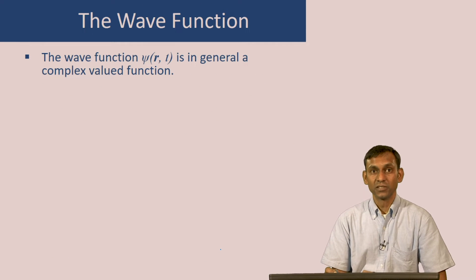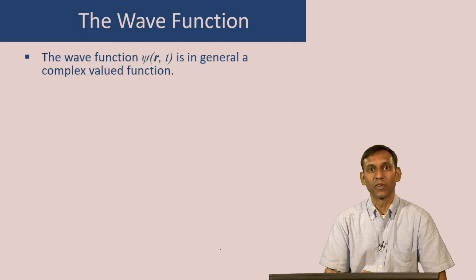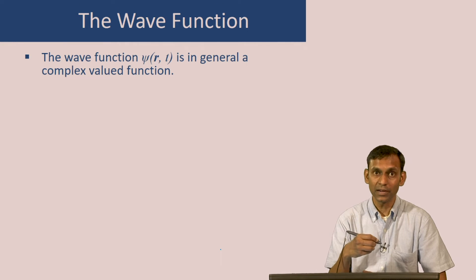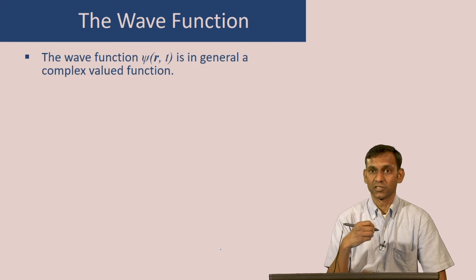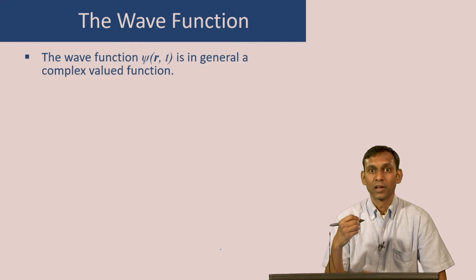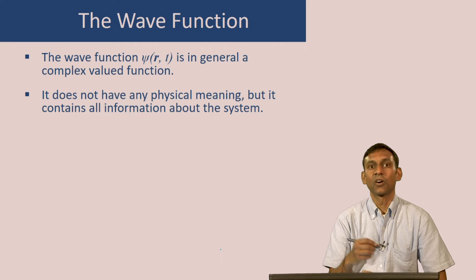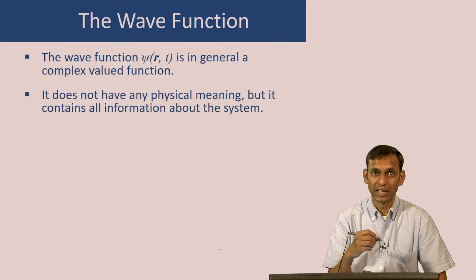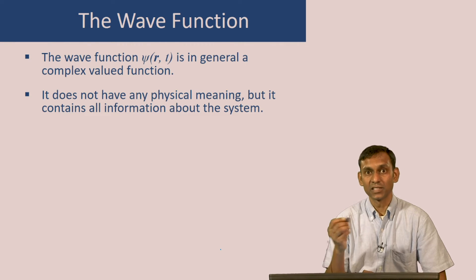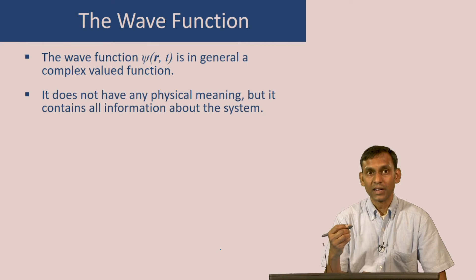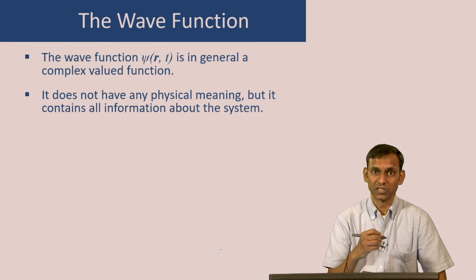The wave function in general is a complex-valued function, meaning it can have a real part and an imaginary part. The wave function itself does not have any direct physical meaning — it is just a function of position and time and does not correspond to anything directly observable. However, it contains all information about the system.